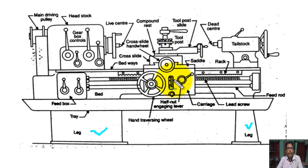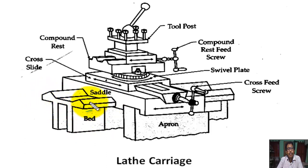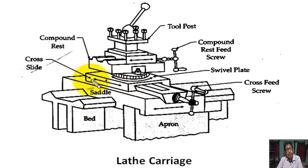Now we learn the details of the carriage. This is the only carriage portion of the engine lathe. This is the lathe bed with V-grooves. This total portion is called the carriage. This is the saddle — the saddle sits on the bed. On the saddle, this is called the cross slide; it moves in the Y direction.